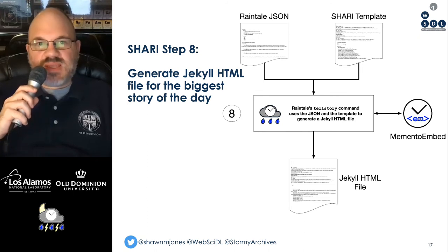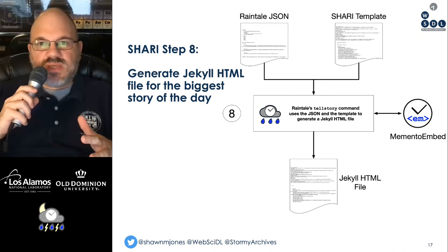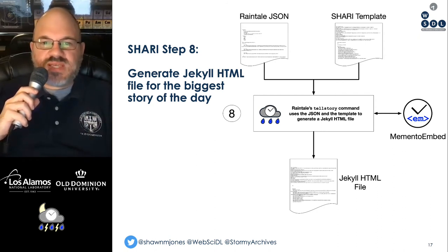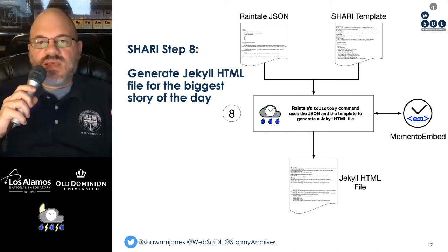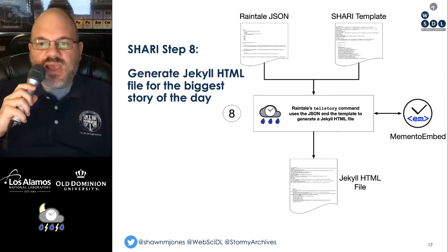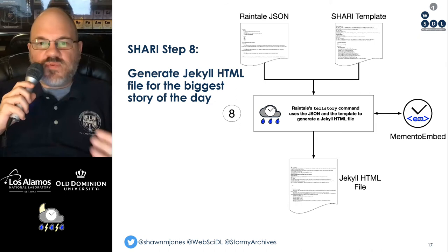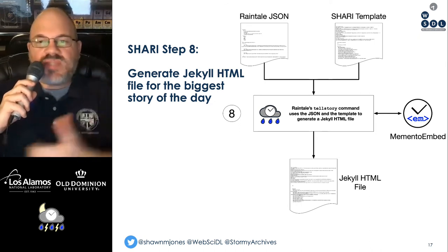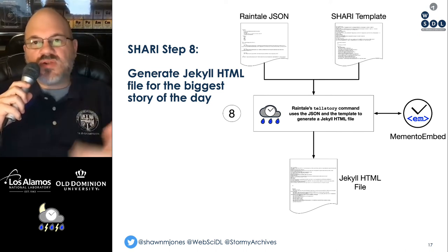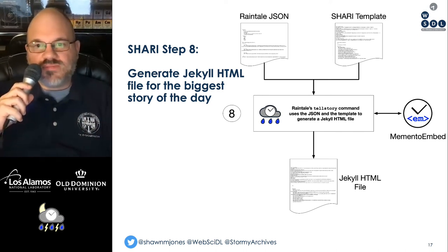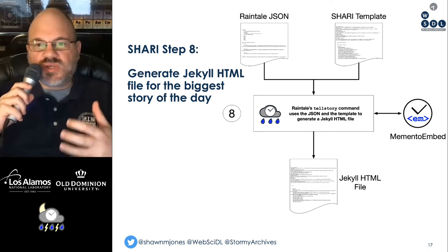In Sherry, step eight, we take the RainTail JSON and a Sherry template as inputs to RainTail. RainTail does the heavy lifting to actually render the story as a Jekyll HTML file. For each memento, it queries MementoEmbed for information about the mementos listed in the story, and then produces cards based on what the template asks it to render.